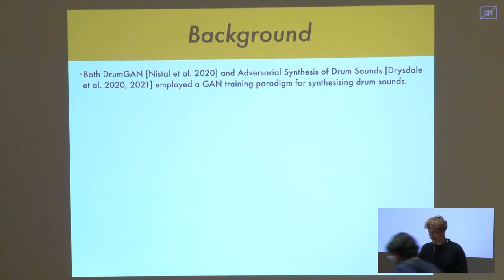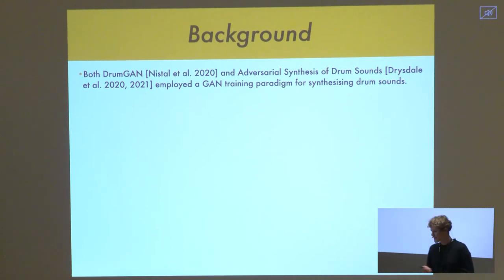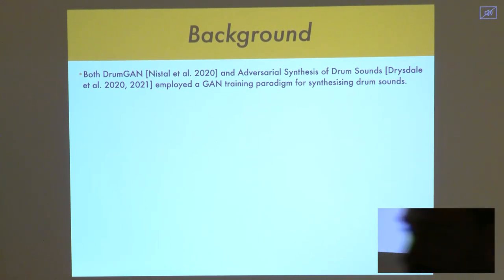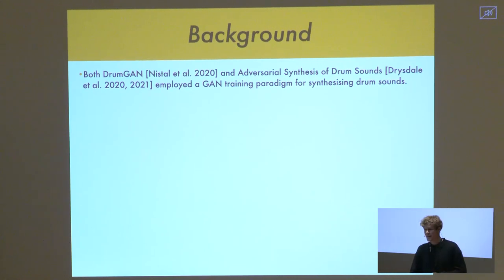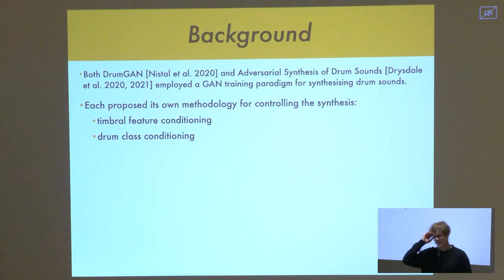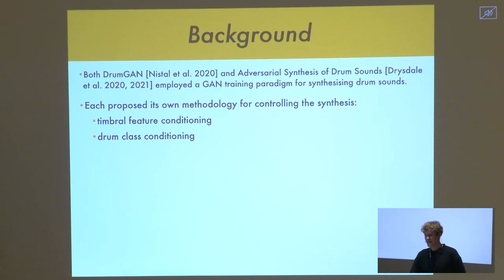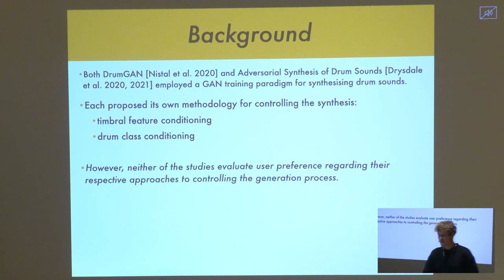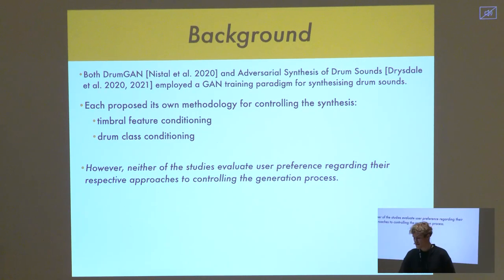Some recent research: Javiena Stahl and Jake Dresdale published DrumGAN, adversarial synthesis of drum sounds, and they both use generative adversarial networks for synthesizing drum sounds. Each of these papers proposed different means for controlling the synthesis — timbral feature conditioning and drum class conditioning respectively. However, neither of these studies evaluated any user preference regarding these respective approaches, and this is something that we were interested in looking at.